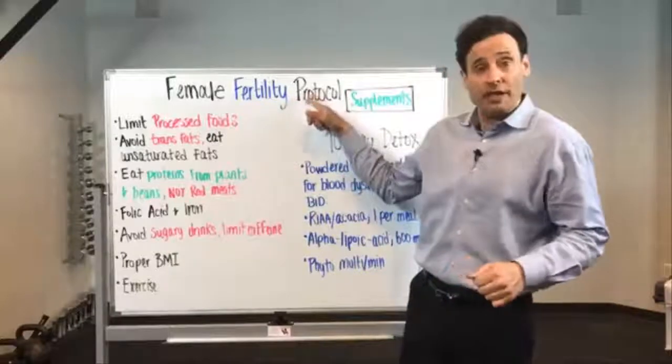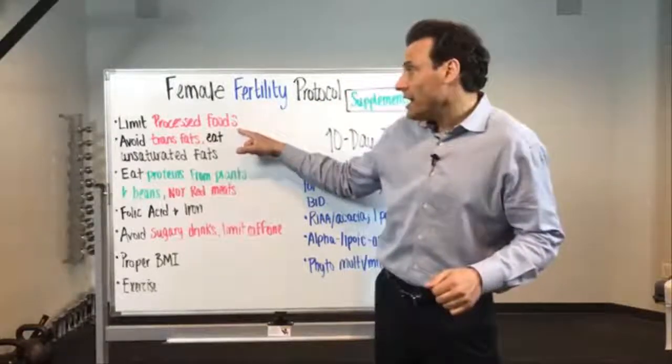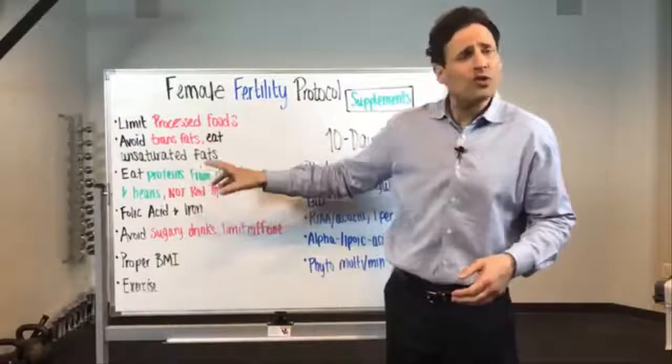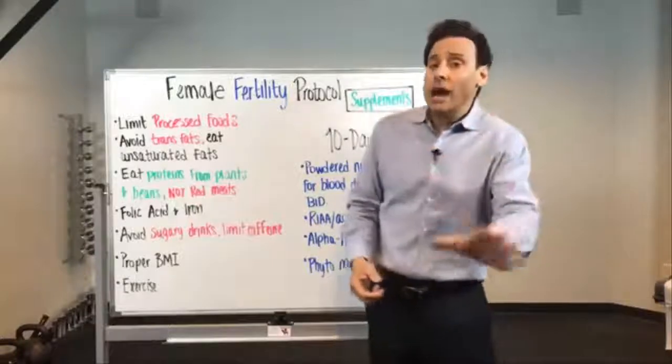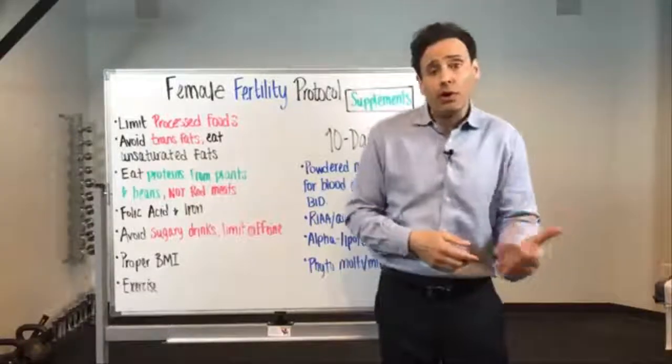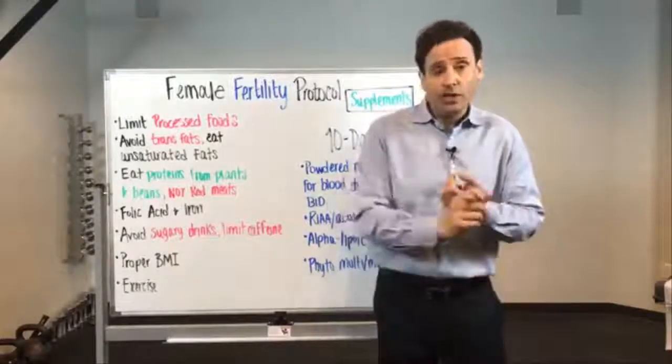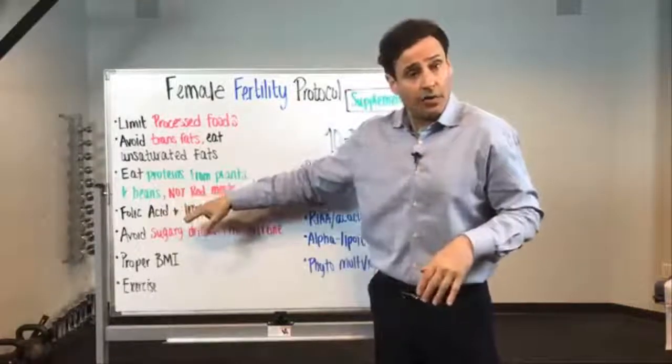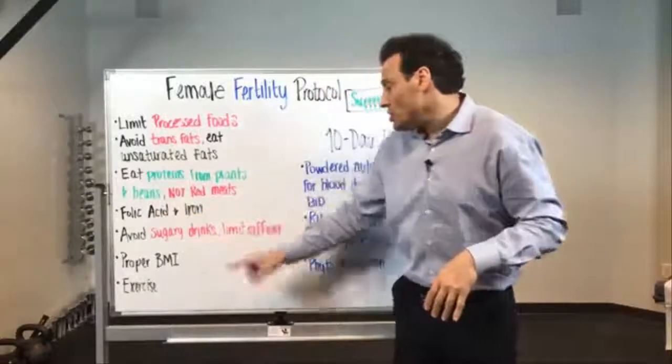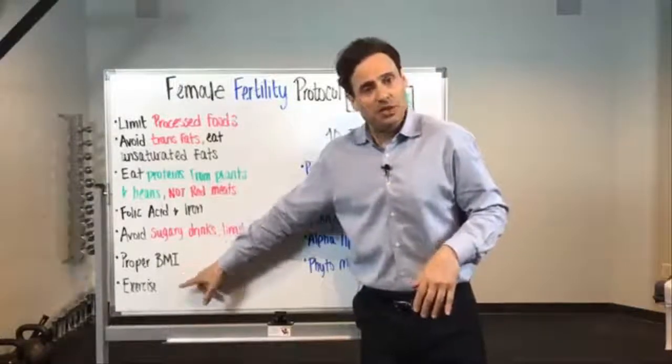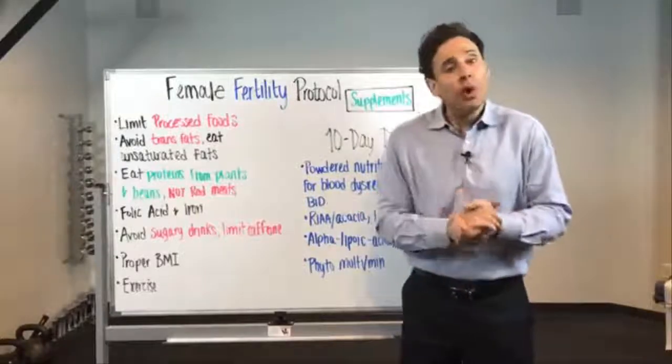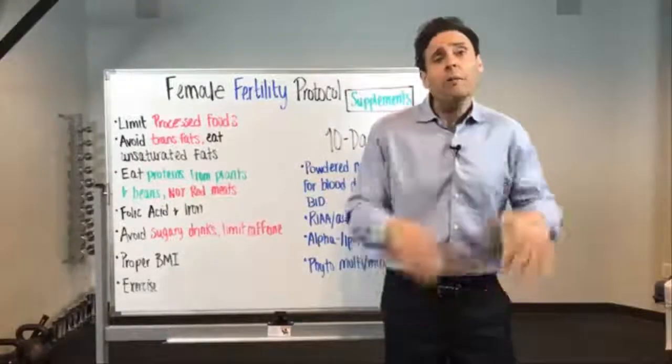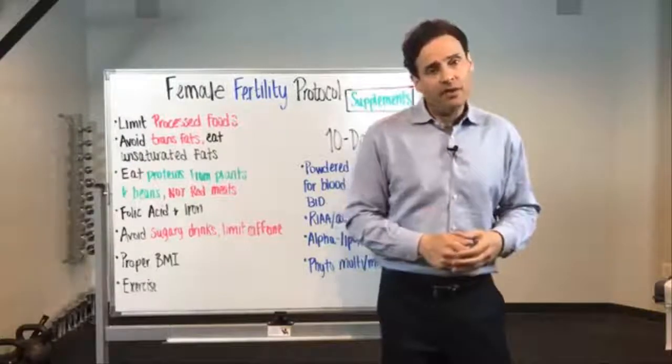So in review, number one, female fertility protocol. Let's do lifestyle. Let's limit the processed foods. Avoid trans fats. Eat more unsaturated fats. Eat quality proteins. Avoid crappy red meats, plants, beans, grass-fed beef. Not as much fish as we want. Fish is high in mercury and a lot of toxins unless it's a smash fish, which is salmon, mackerel, anchovies, sardines, and herring. Make sure everything's high, your beans and your plants. Folic acid and iron. Avoid your sugary drinks. Limit your caffeine. Make sure your body composition is good. Exercise. Your 10-day clear change kit works fabulously. And make sure you're taking insinase alpha-lipoic acid and a phyto-multi. You do that, you'll shrink up. Blood sugar will modulate down. You'll get rid of your heavy metals. It's something I use.